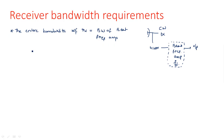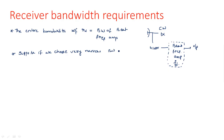Now, what should the bandwidth be — less or high? Suppose if we choose very narrow bandwidth for the beat frequency amplifier, what happens? We may miss some information — the beat frequency may miss the original Doppler frequency component. So missing of the Doppler component may occur.